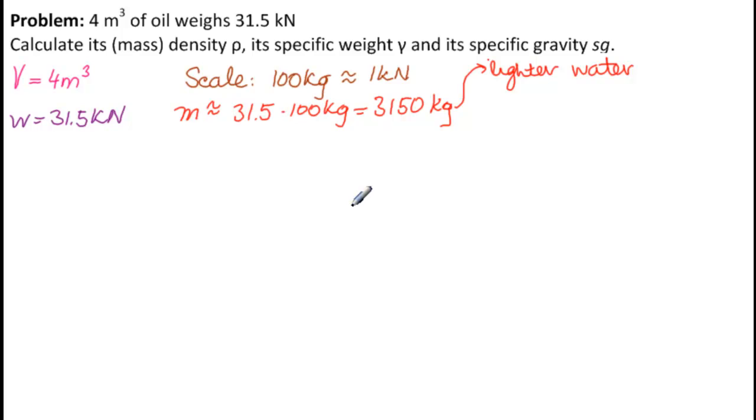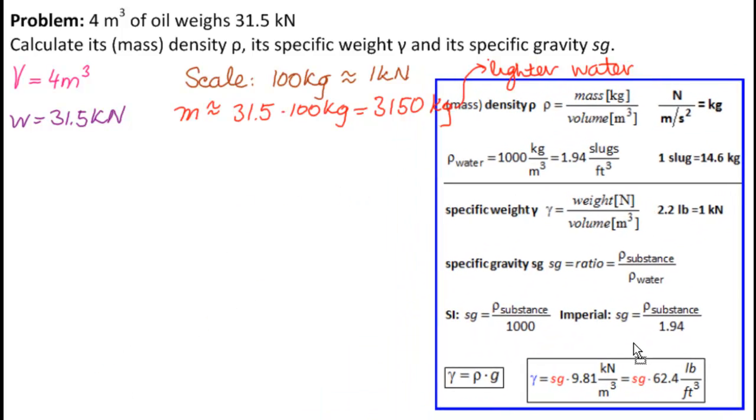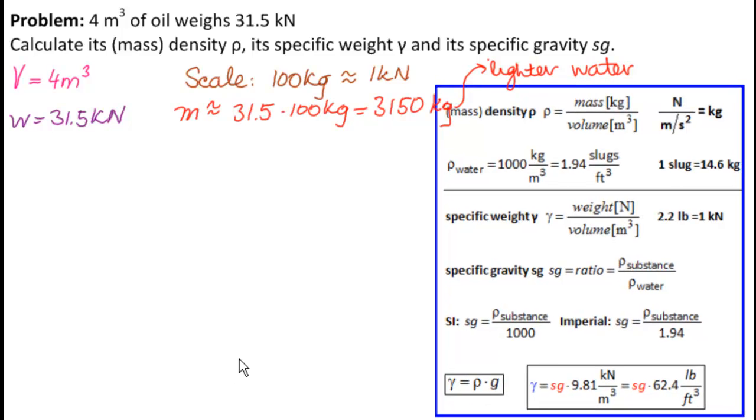Okay, now let's go to our formulas and do our calculations. So here are our formulas. What do we have? We have weight and volume. What's the easiest thing to calculate first with weight and volume? The specific weight, gamma. So gamma equals weight over volume. So 31.5 kilonewtons over 4 meters cubed.